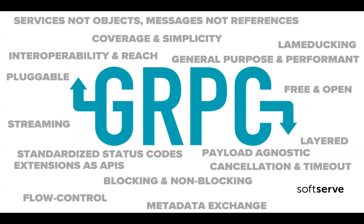These are the principles Google said gRPC has to have: work on services, not objects — build services using interface definition languages. They wanted coverage and simplicity so that everything should be available for every single language. Whether you're using Java, Scala, Dart, or building small services in Go, it should be possible.